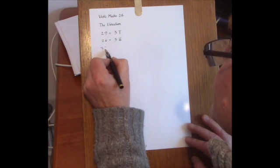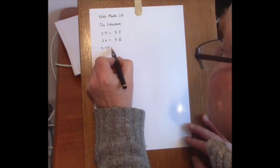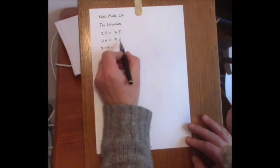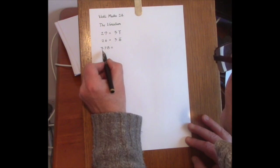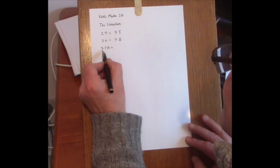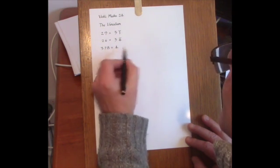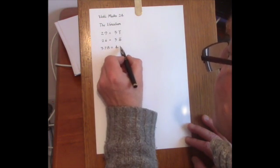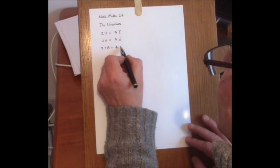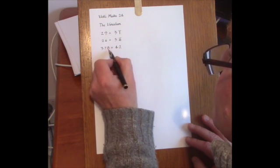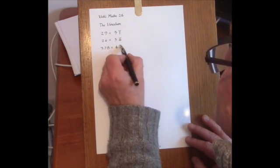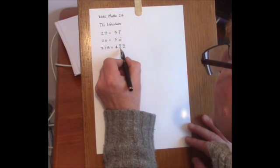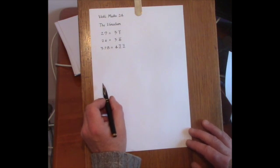And if we have a longer number like 378, we can turn both the 7 and the 8, which are large digits, into small ones by replacing them with winculums. How to do that? You increase this 3 by 1 making 4, and then apply all from 9 and the last from 10 to the numbers you wish to winculate. So 7 from 9 is 2, and the last from 10 is a 2 as well. So that's 400 and winculum 2 in the tens column and winculum 2 in the units column.